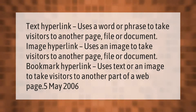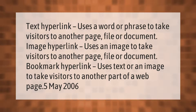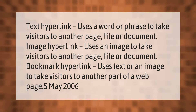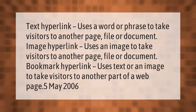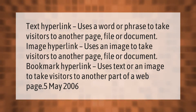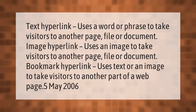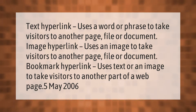Text hyperlink uses a word or phrase to take visitors to another page, file, or document. Image hyperlink uses an image to take visitors to another page, file, or document. Bookmark hyperlink uses text or an image to take visitors to another part of a web page.